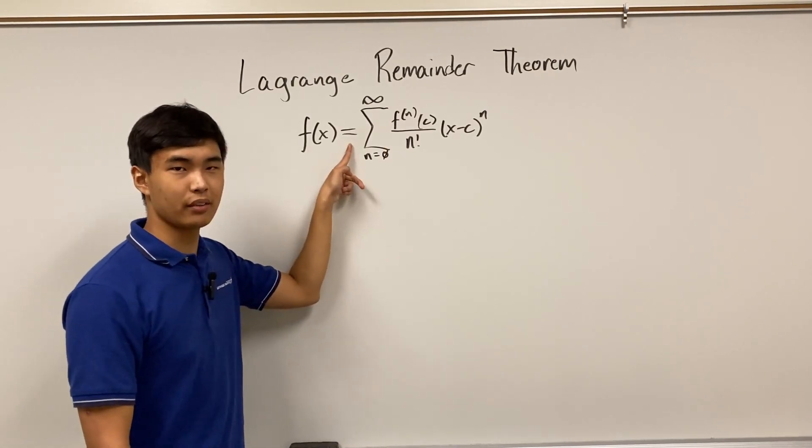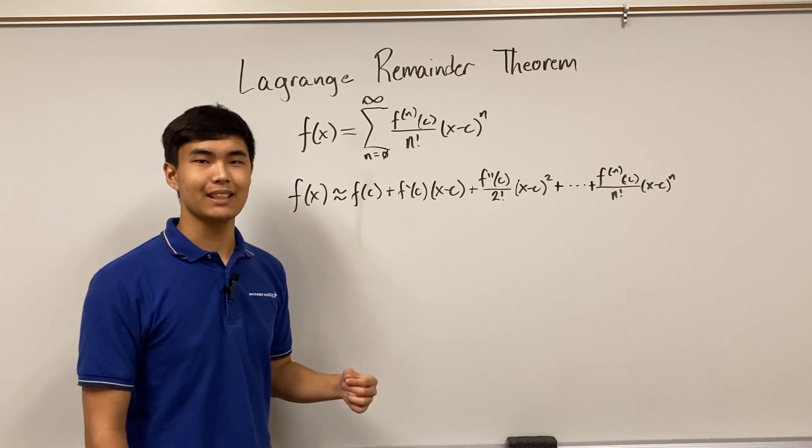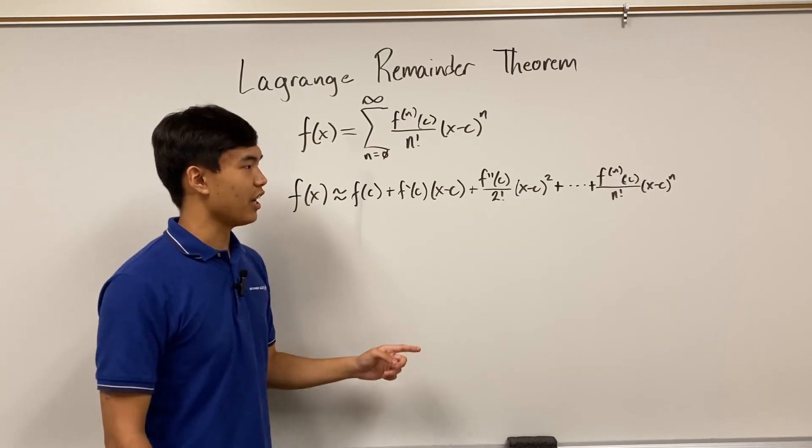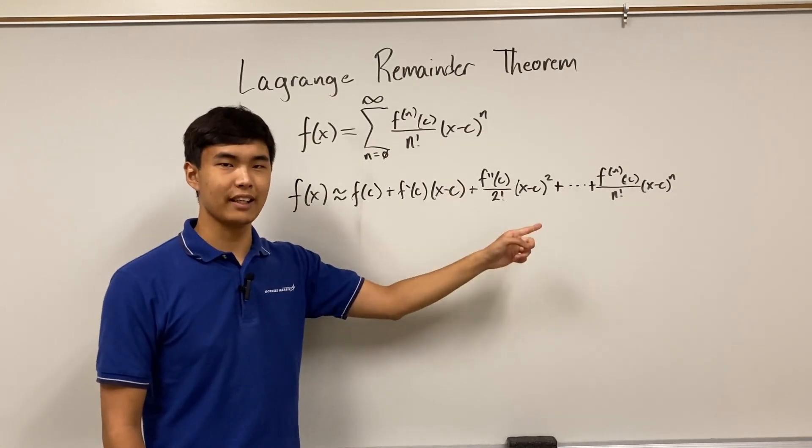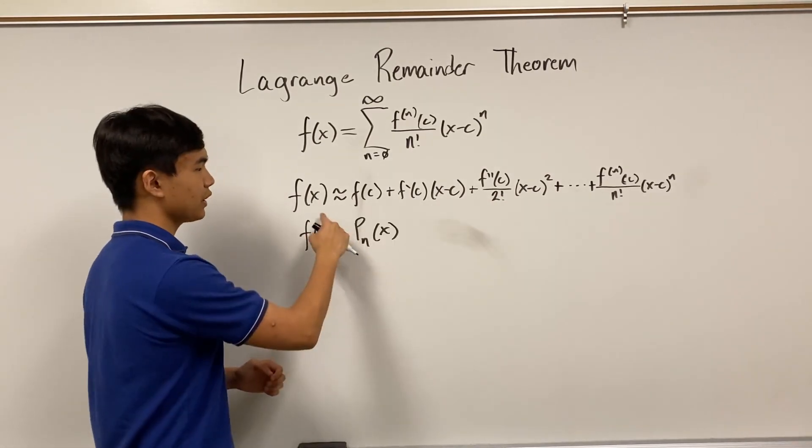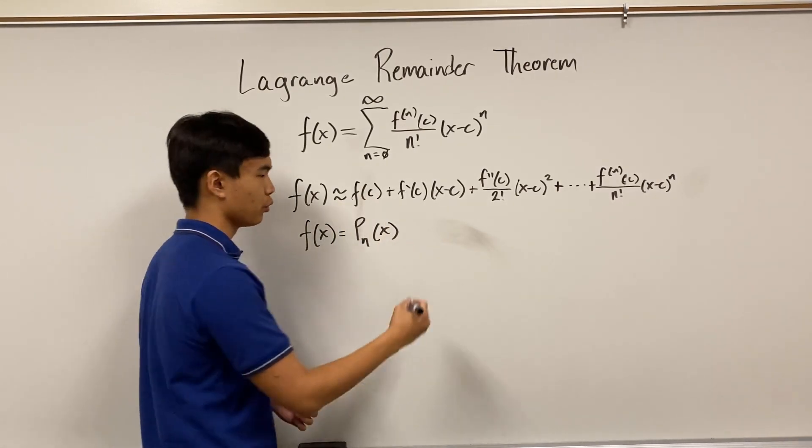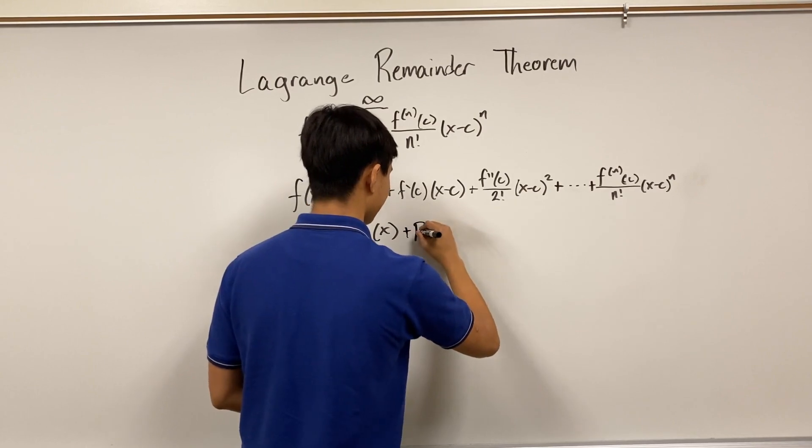But this equal sign only holds if we have an infinite number of terms. Because a Taylor series is inherently an approximation, if we have a finite number of terms n, then there's always going to be some error between the model and the actual function. So if we want the two sides of this equation to be equal, then we have to add on our error, which we call the remainder of the series.